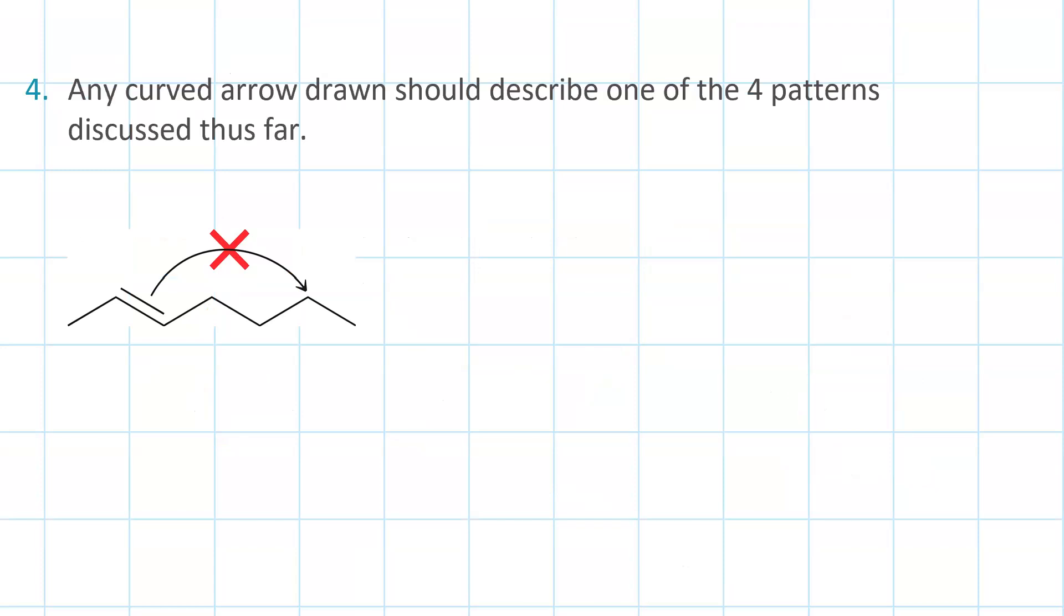Rule number four. Any curved arrow that you draw should describe one of the four patterns. Remember those? Nucleophilic attack, loss of a leaving group, proton transfer, or carbocation rearrangement. If it's not one of those, then it's probably not right.